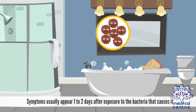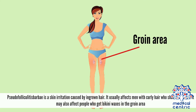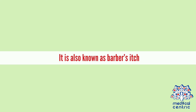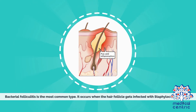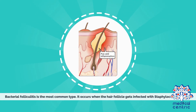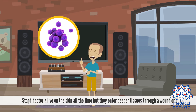Symptoms usually appear 1-2 days after exposure to the bacteria that causes it. Pseudofolliculitis barbae is a skin irritation caused by ingrown hair. It usually affects men with curly hair who shave too close. It may also affect people who get bikini waxes in the groin area, and it is also known as barber's itch. Bacterial folliculitis is the most common type, occurring when the hair follicle gets infected with Staphylococcus aureus. Staph bacteria live on the skin all the time, but they enter deeper tissues through a wound or cut.